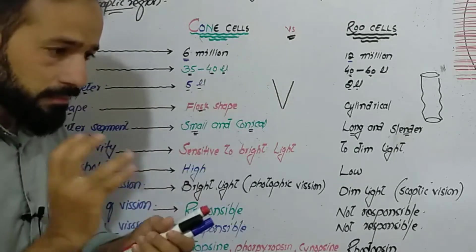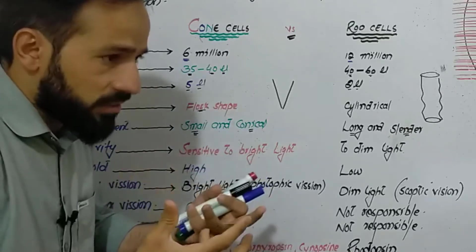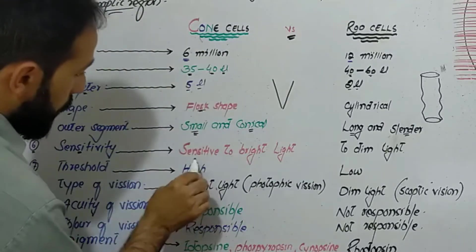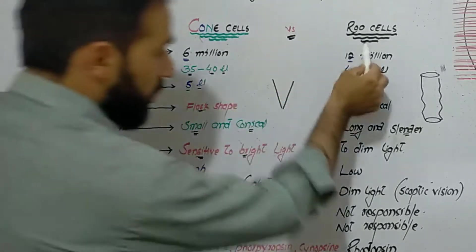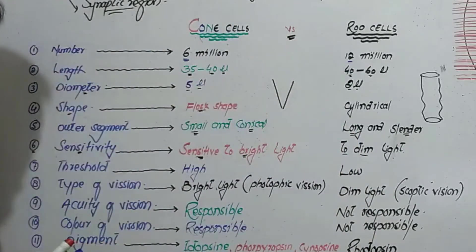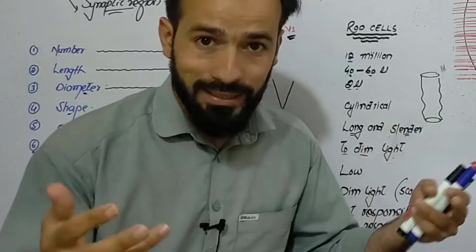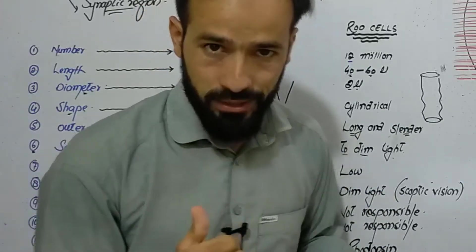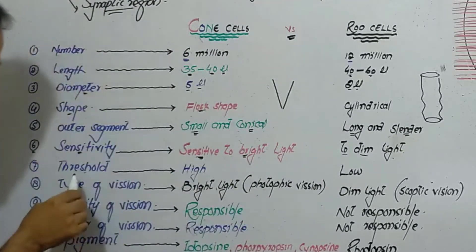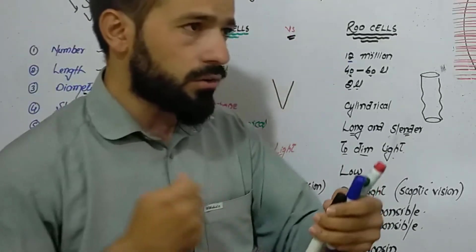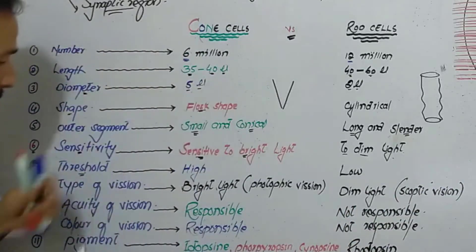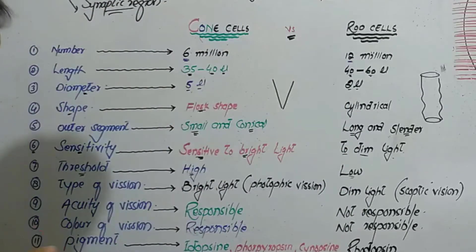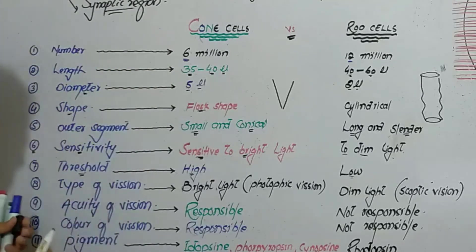The next difference is in sensitivity — who is more sensitive to light, and who is activated faster and generates currents faster. Cone cells are more sensitive to bright light, but rod cells are more sensitive to dim light. Whenever there is bright light, cones are more active; whenever there is dim light, rod cells are more active. Regarding threshold, cone cells have a high threshold and rod cells have a low threshold.